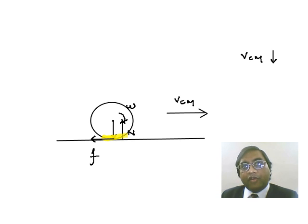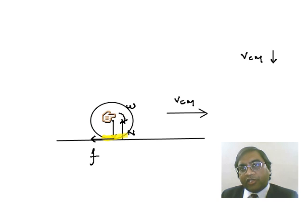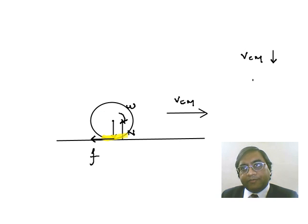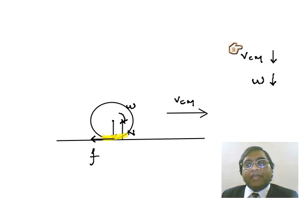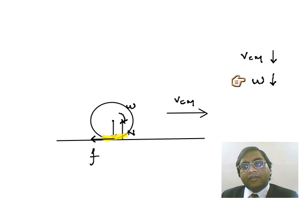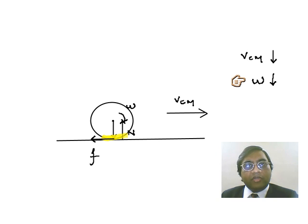But how about omega? The normal reaction produces a torque which tries to oppose omega. So the frictional force decreases VCM and the normal reaction decreases omega. That is how a rolling ball comes to a halt.